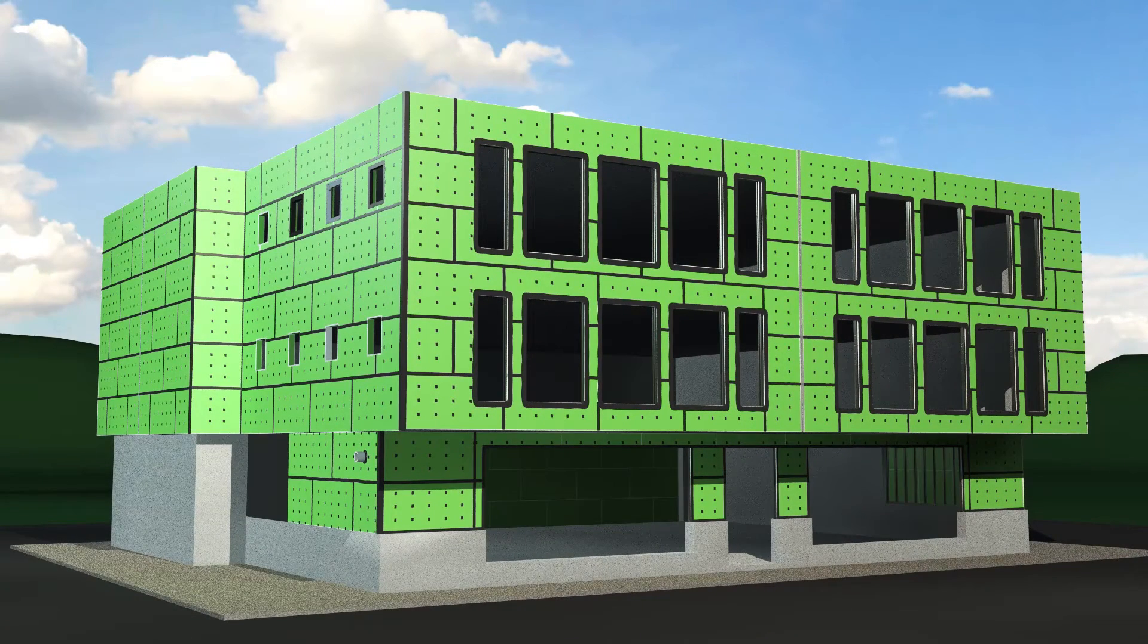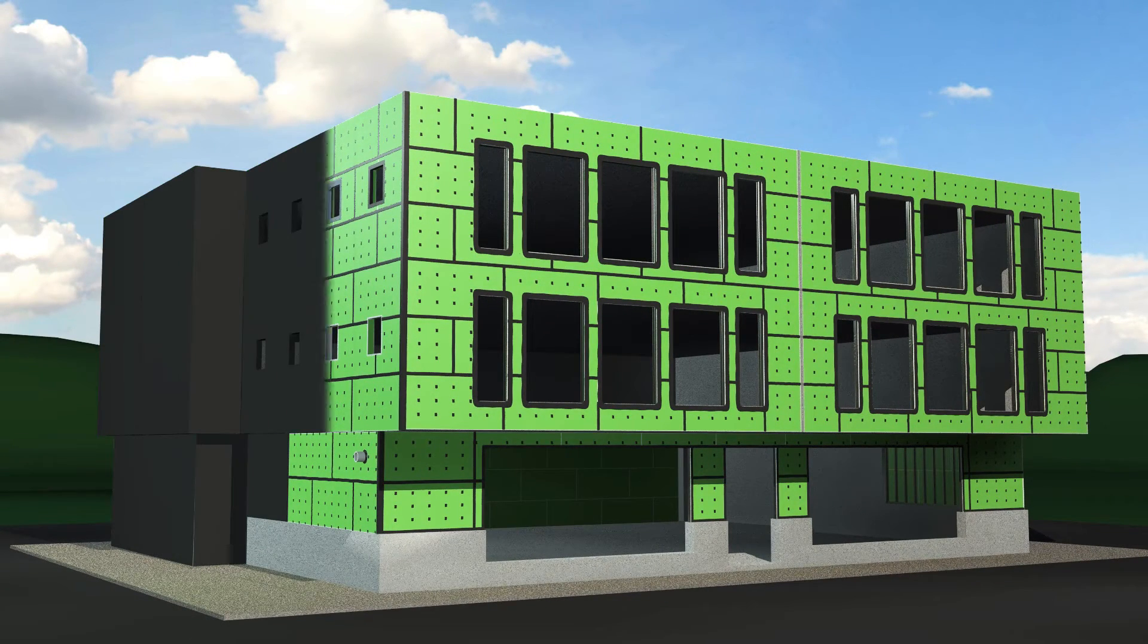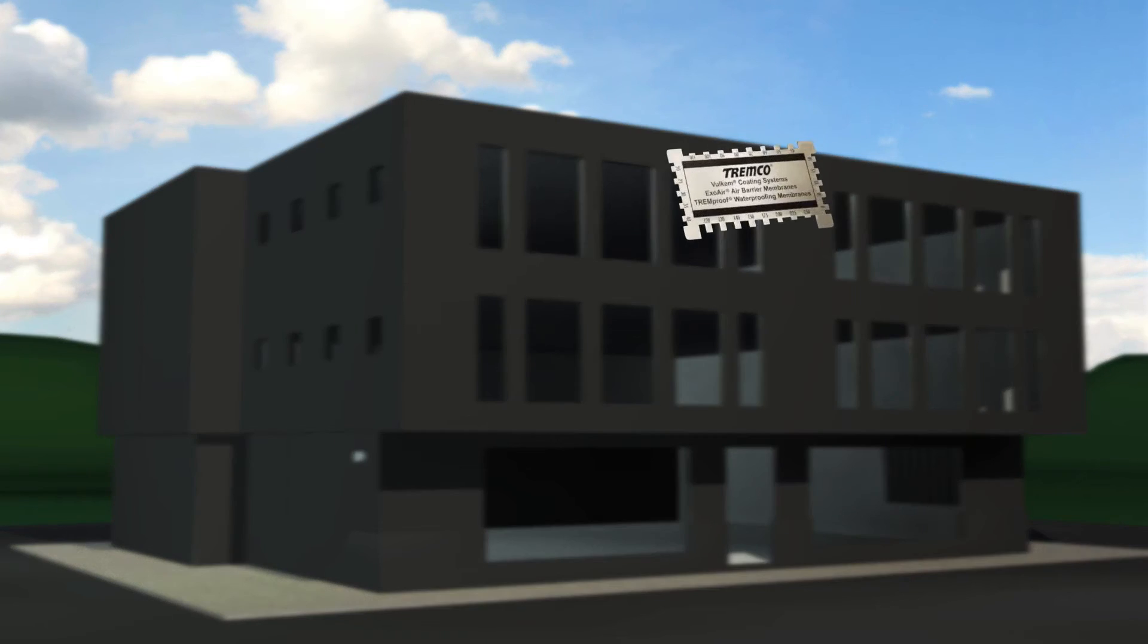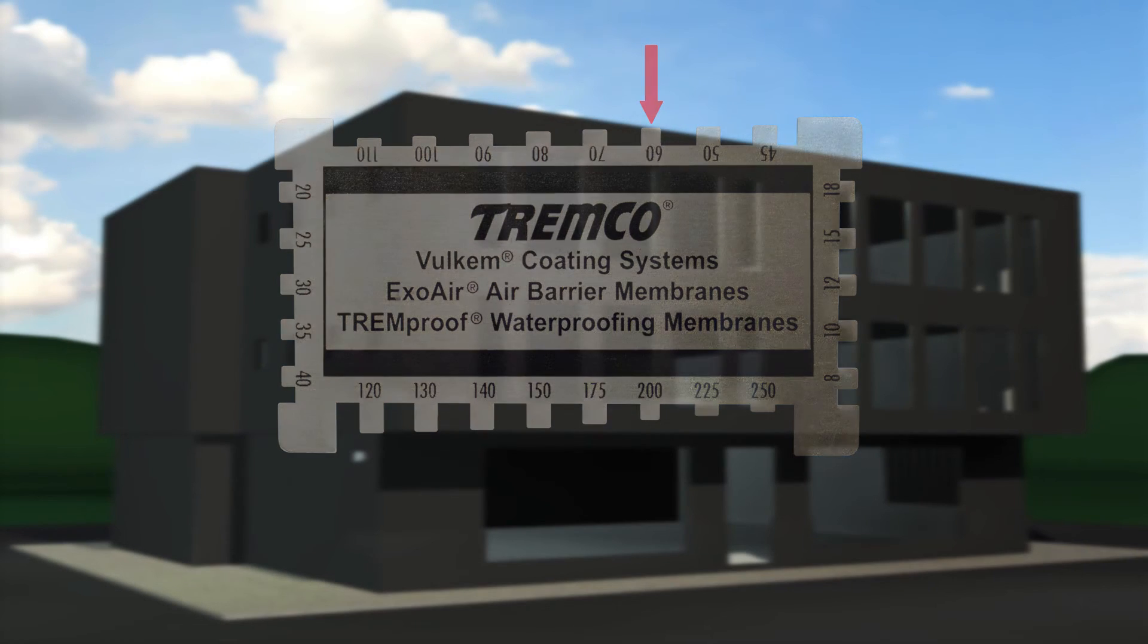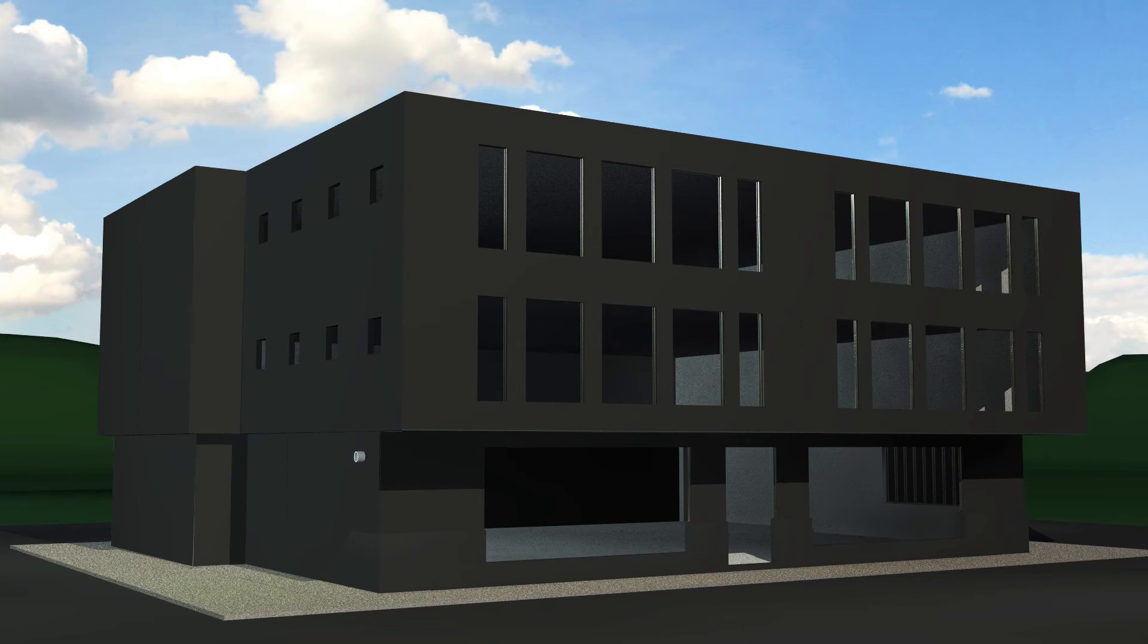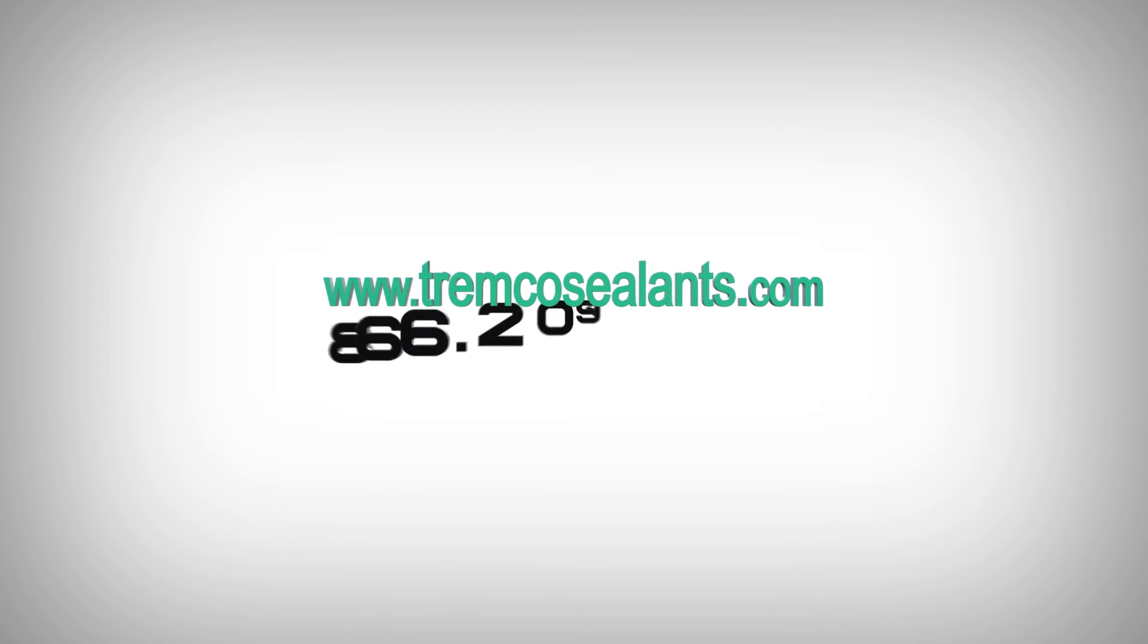Using a mill gauge, make sure at least 60 wet mills of the ExoAir 220 membrane have been applied to the reinforcing mesh. For complete application instructions, including clean-up tips, alternate methods, and common industry application issues, please visit our website at www.tremcoSealants.com.